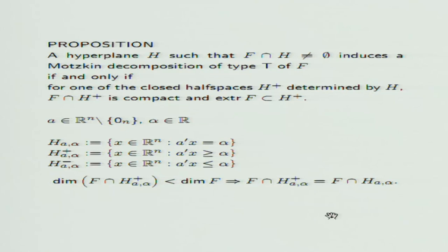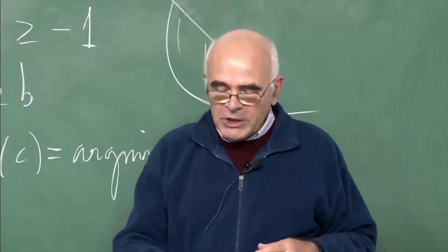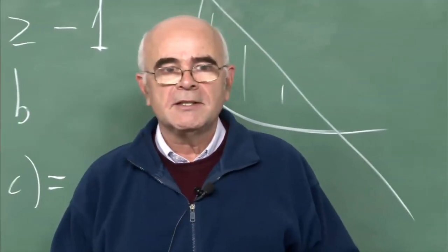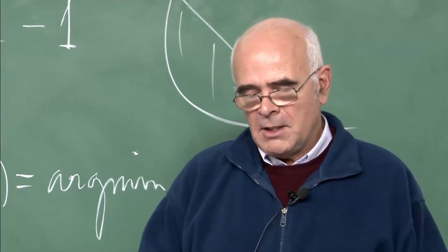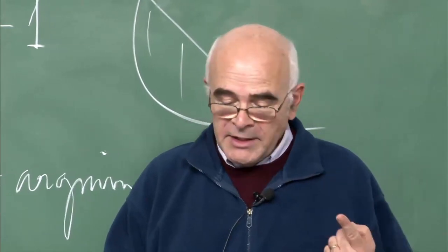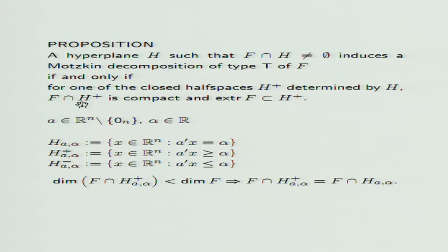When does a hyperplane inducing a non-empty slice also induce a Motzkin decomposition of type T? If and only if one of the closed half-spaces determined by H gives a compact truncation and that compact truncation contains all the extreme points of the set. An immediate consequence is that if the set admits a Motzkin decomposition of type T, it can contain no lines — if it contains one line, it is impossible to have a compact truncation.